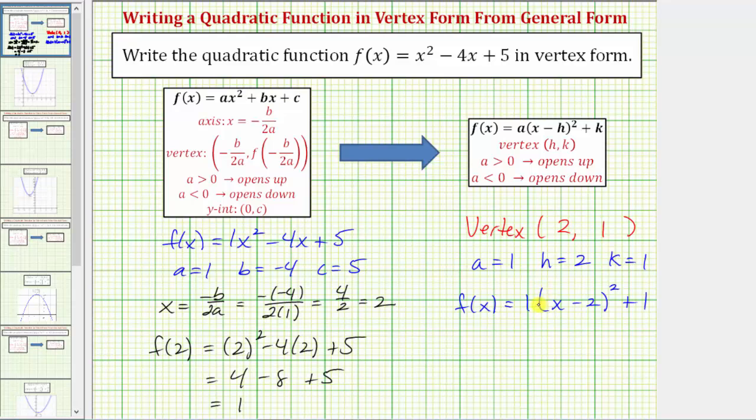Again, we have a times the quantity x minus h squared plus k. However, here, because a is one, we can leave it off. It's more common just to write f of x equals the quantity x minus two squared plus one.